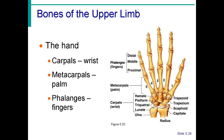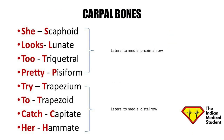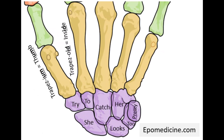The hand is divided into three parts: the carpals or wrist, the metacarpals or palm, and the phalanges or fingers. There is a useful mnemonic to help memorize the carpal bones.